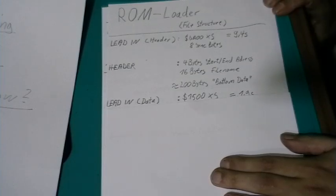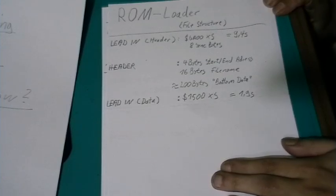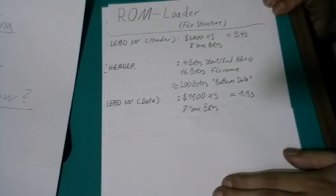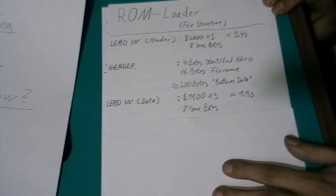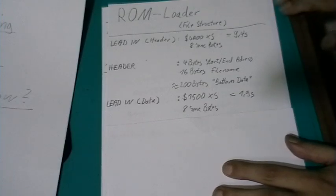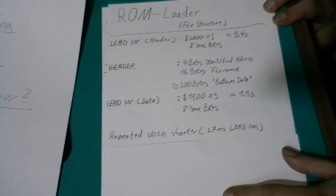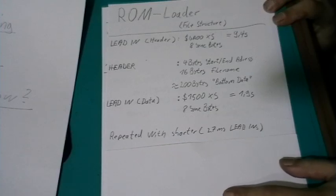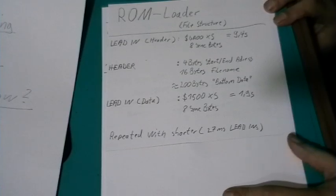Then after that we have the lead in for the data. It's hexadecimal 1500 times short pulse totaling 1.9 seconds. Followed by 8 sync bytes again. After the data block, both the header and the data block are repeated with short lead ends of 27 milliseconds each.